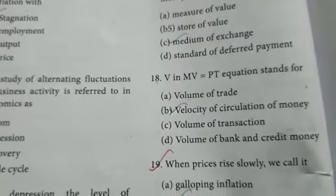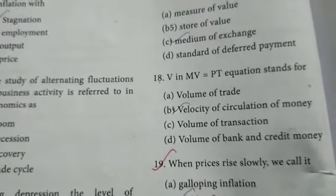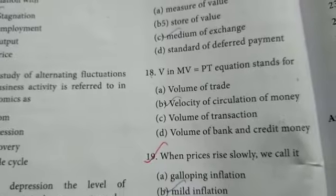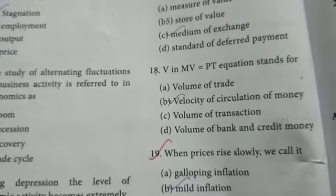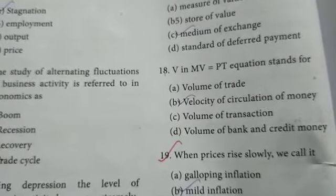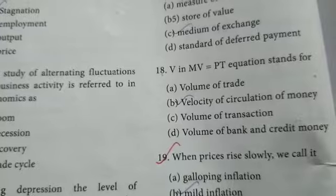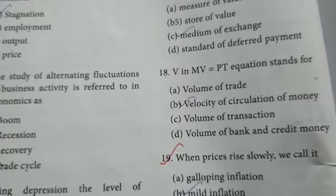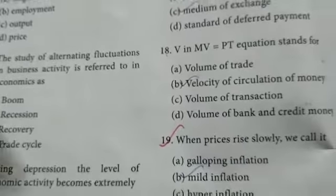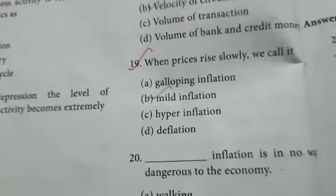V in the equation MV = PT stands for the velocity of circulation of money.